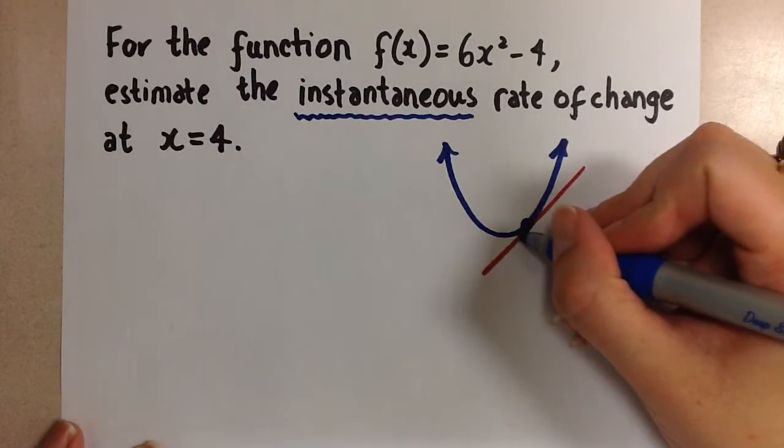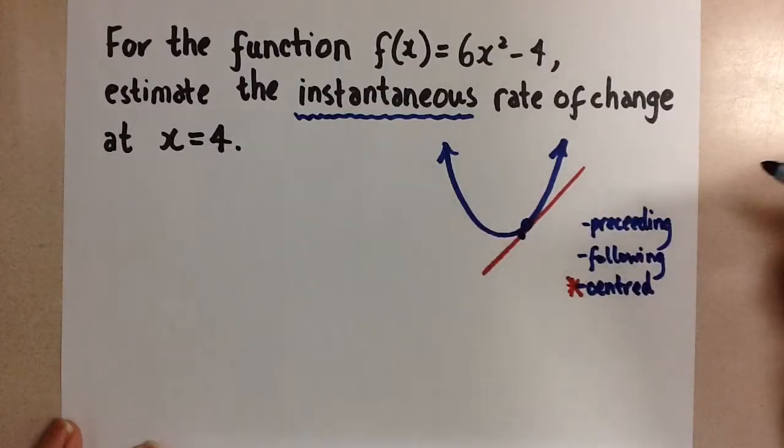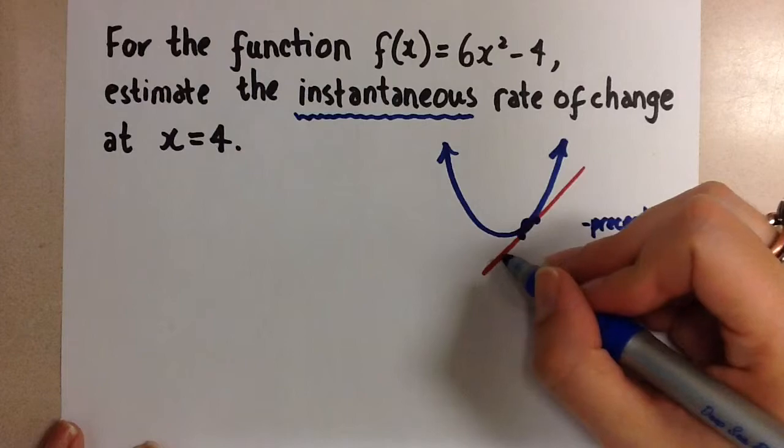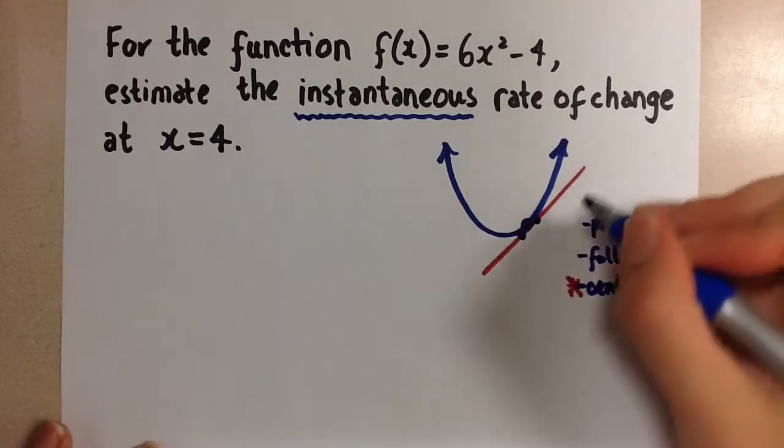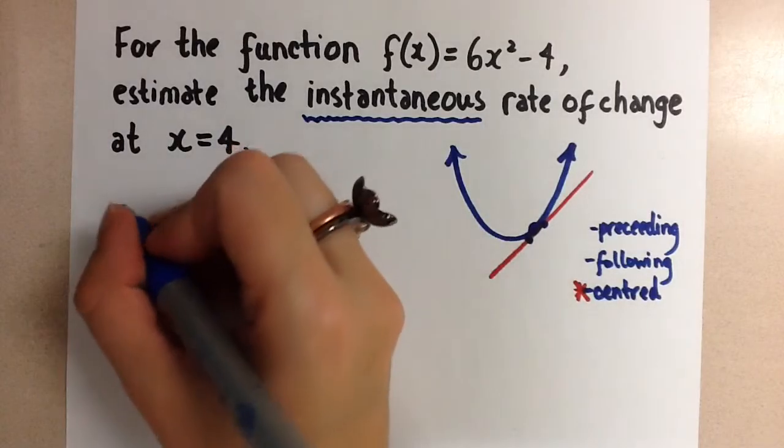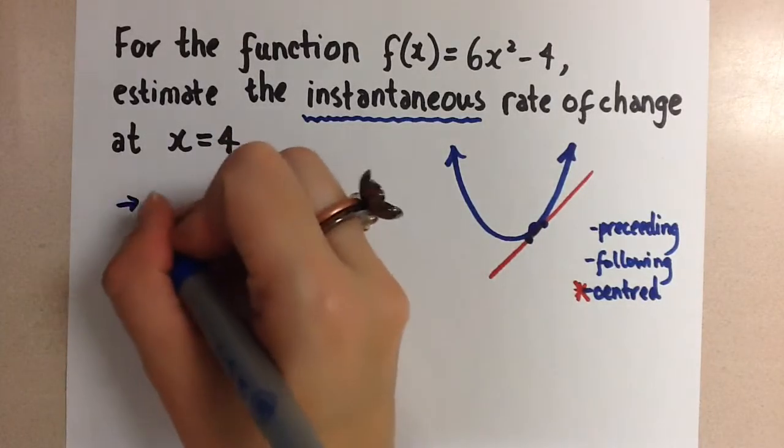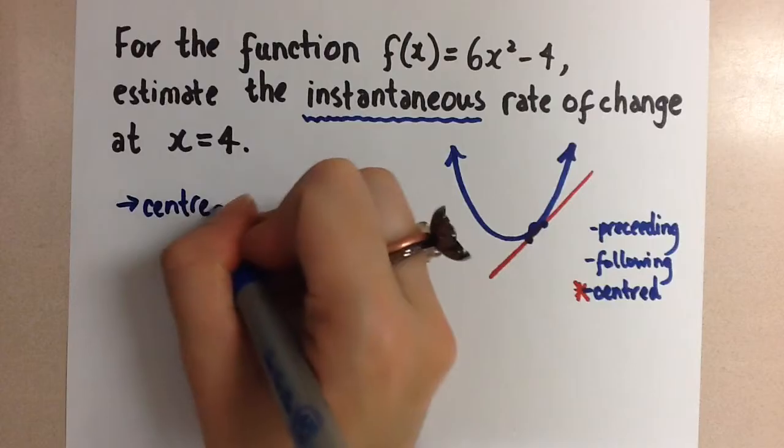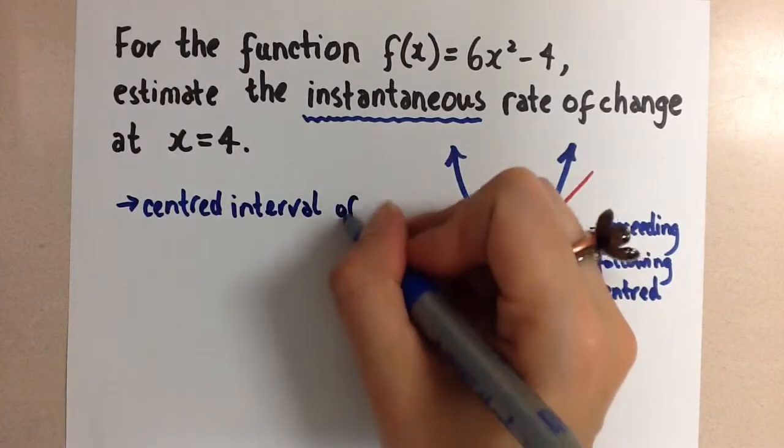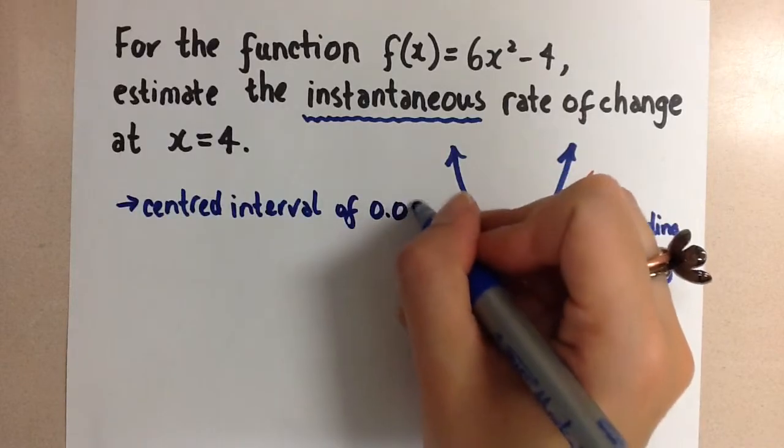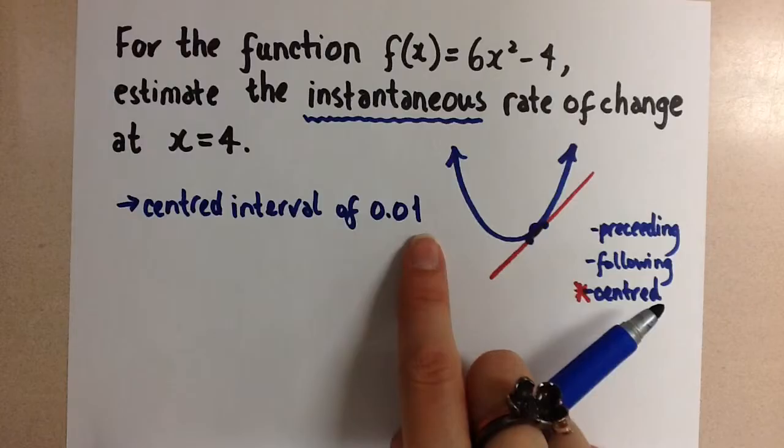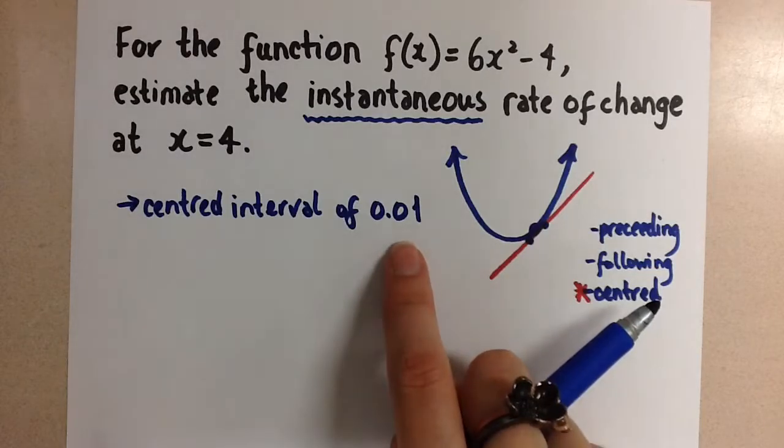So that means we're going to pick a point just before x equals 4 and just after x equals 4, and then find the slope of that line using those two points. So to do this question, we are going to choose to use a centered interval of length 0.01. We just have to choose a length that is very small, and so for our purposes, this is a good number to choose.